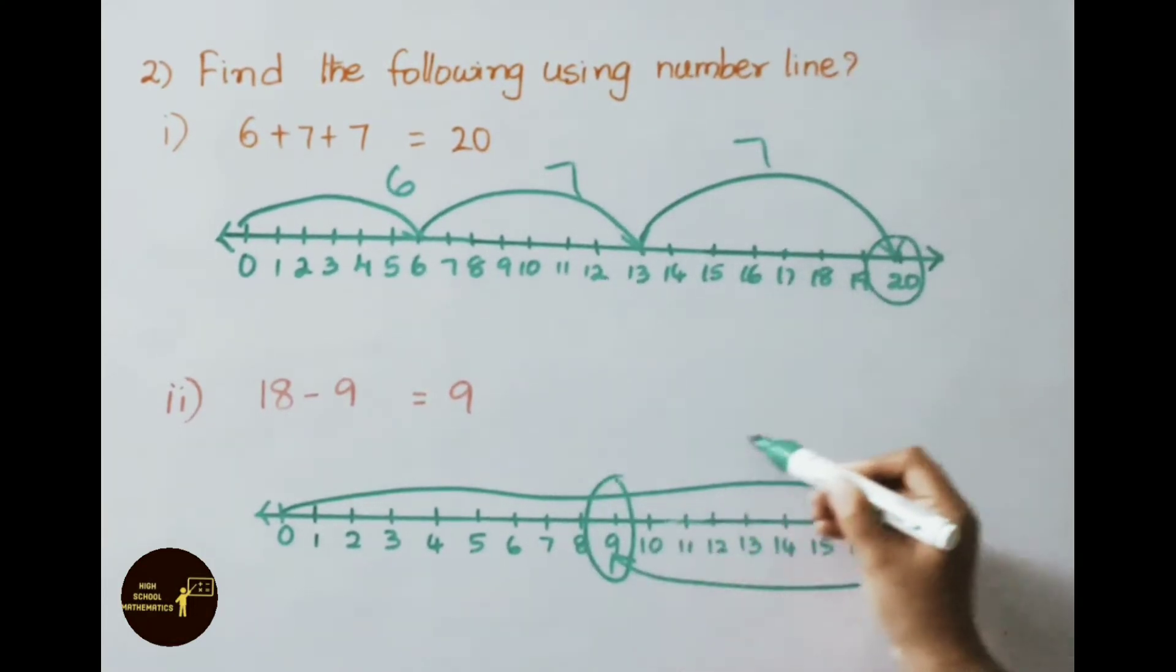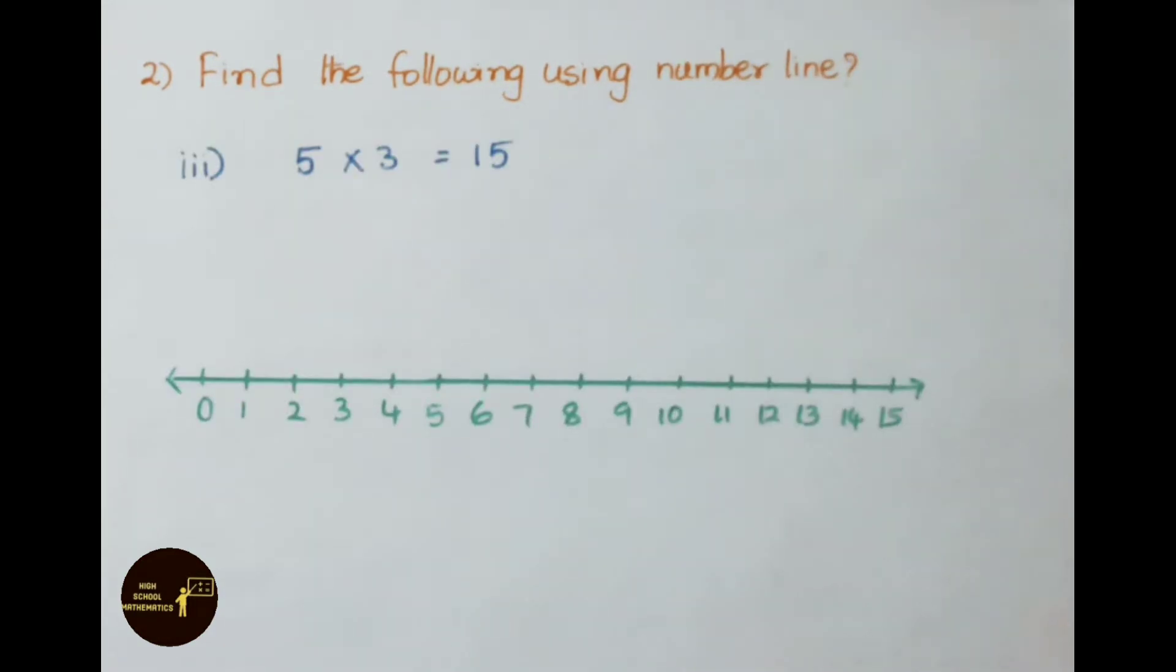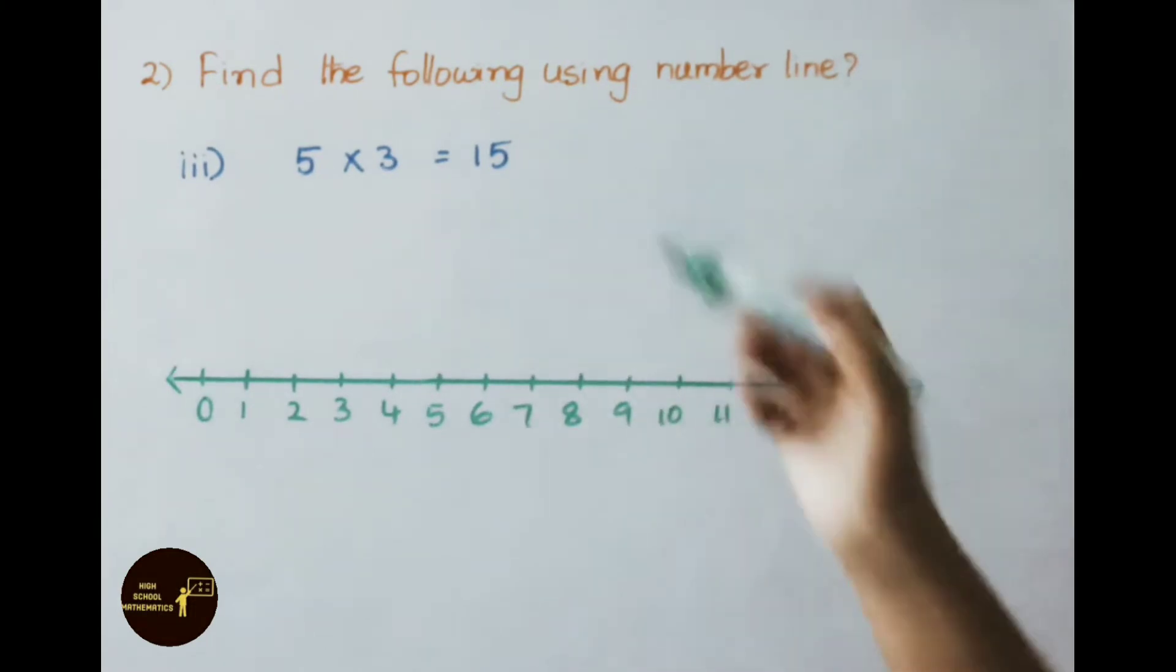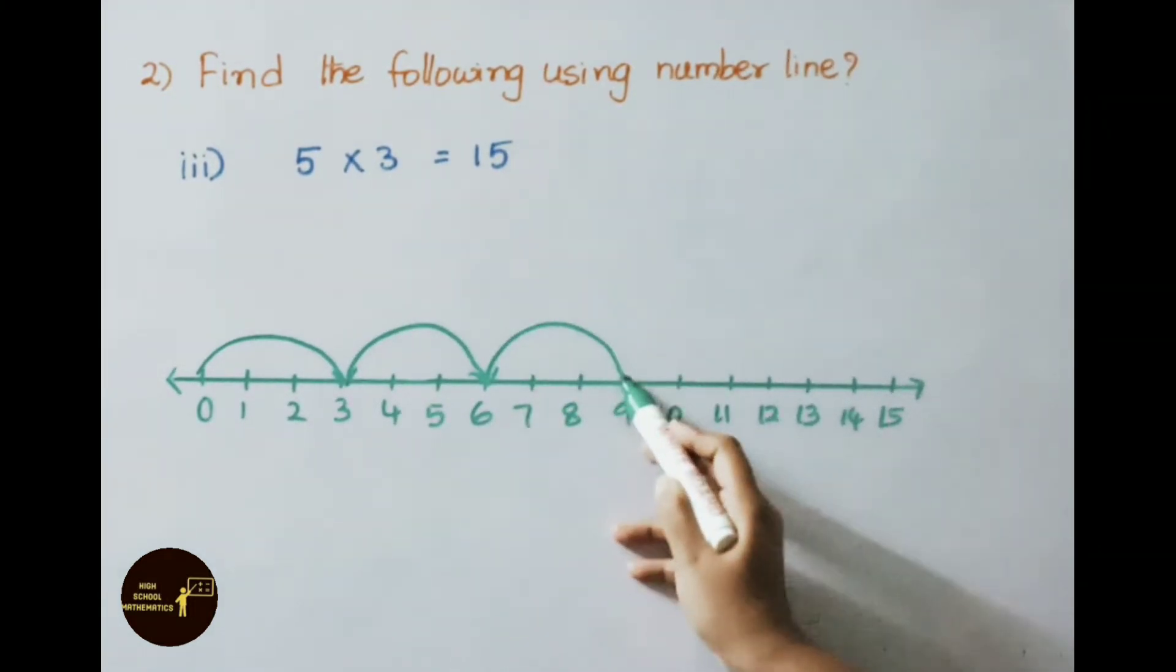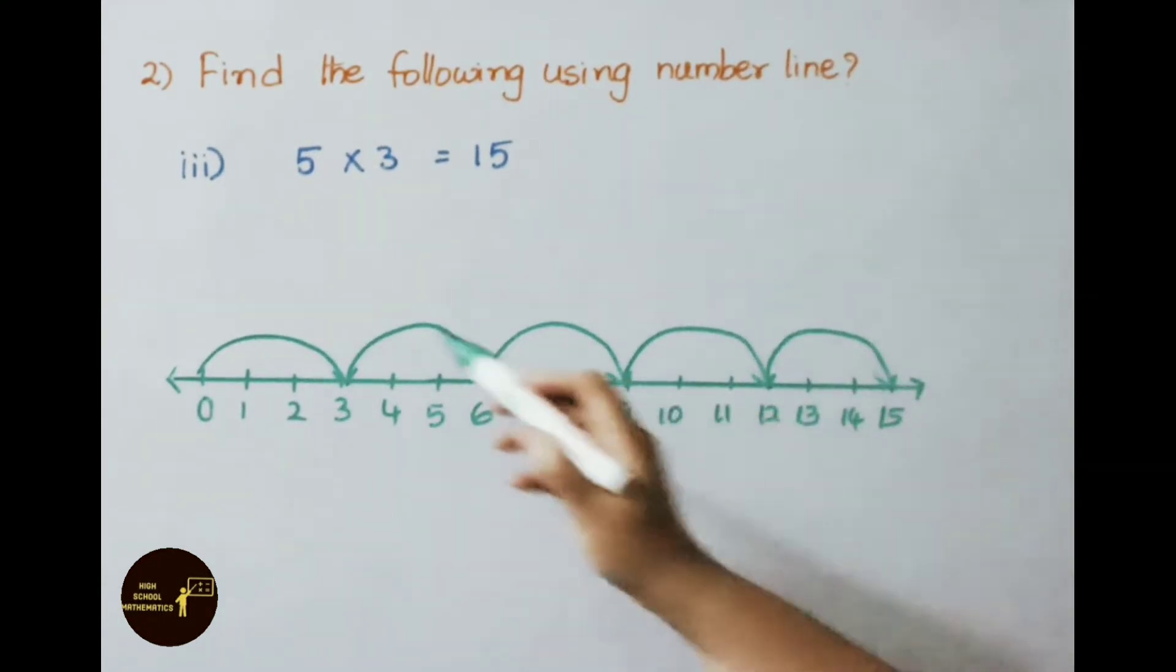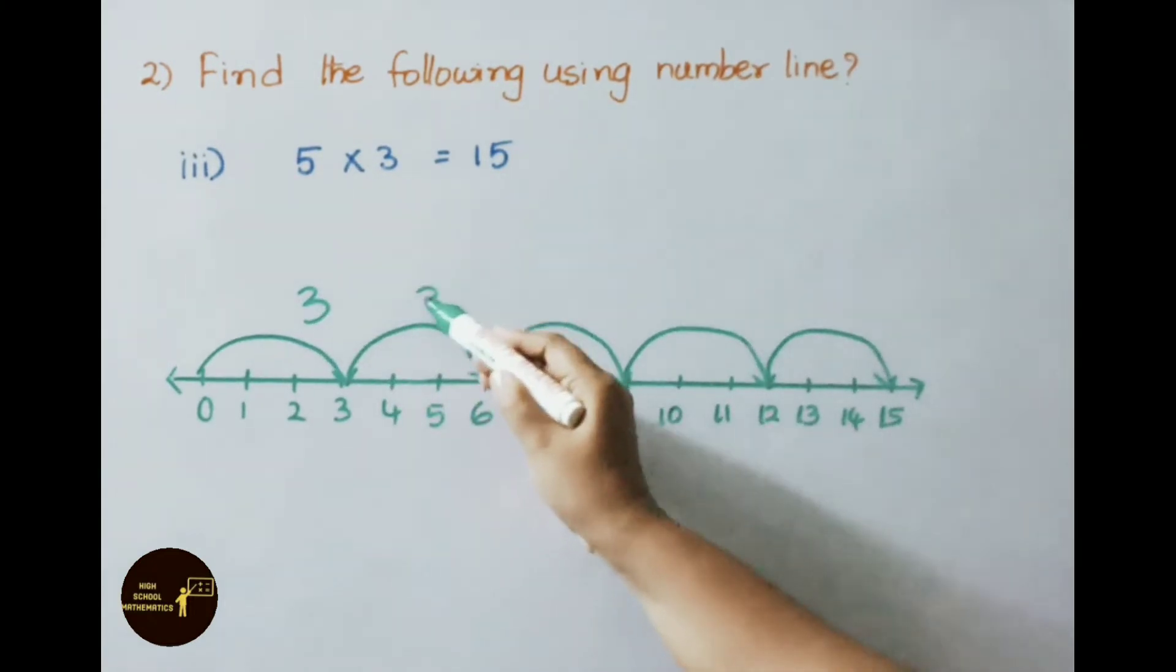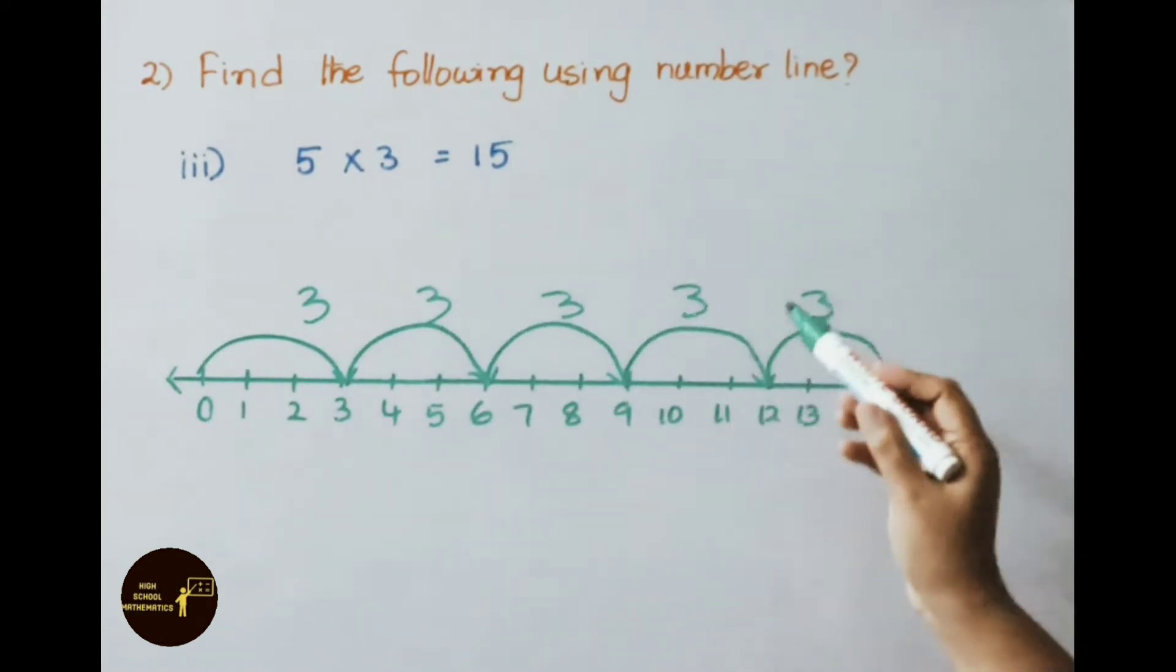See now third one: 5 into 3 equals 15. That means 5 times we have to show 3 on the number line. 5 times 3 plus 3 plus 3 plus 3 plus 3, that means we get answer 15.